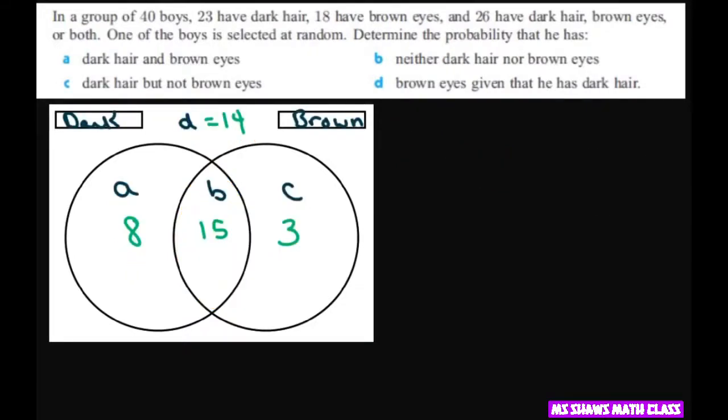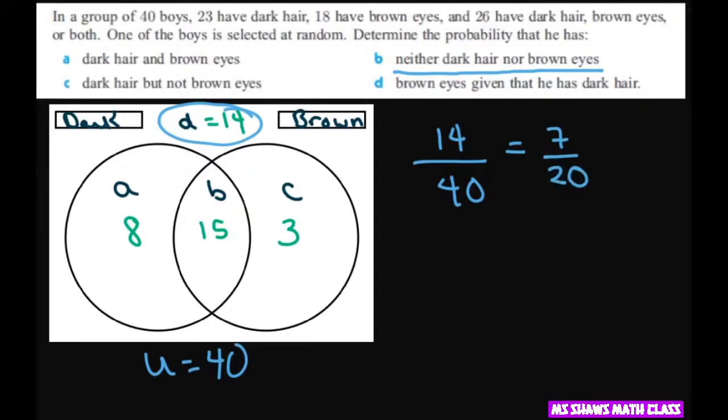We want neither dark hair nor brown eyes. So to do that, you just take the neither, which is 14. So that's gonna be 14 divided by your total. So your universal set is 40. So that's going to equal 7 twentieths if you reduce that.